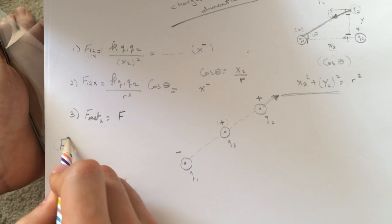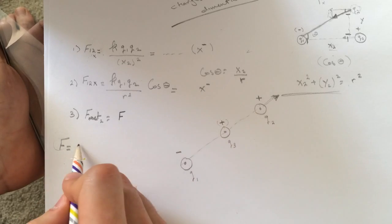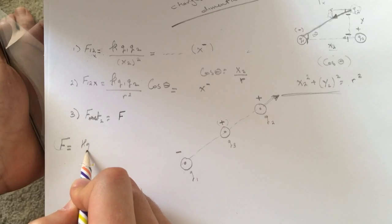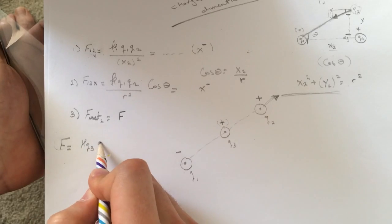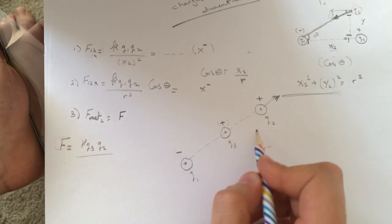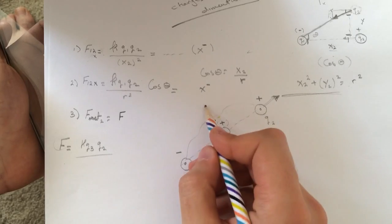So the force, total net force on this guy is equal to K Q3 Q2 divided by... We said that the total thing is R, right? And it's in between. So you'll do R divided by 2.